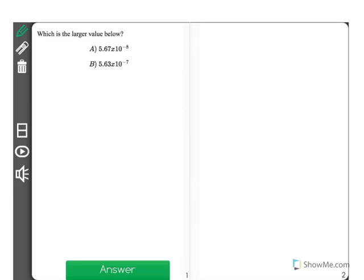Which is the larger value below? 5.67 times 10 to the negative 8 or 5.63 times 10 to the negative 7.